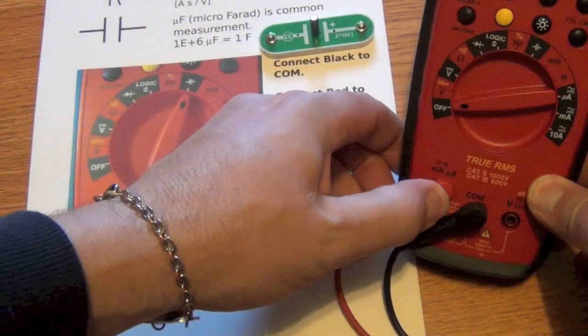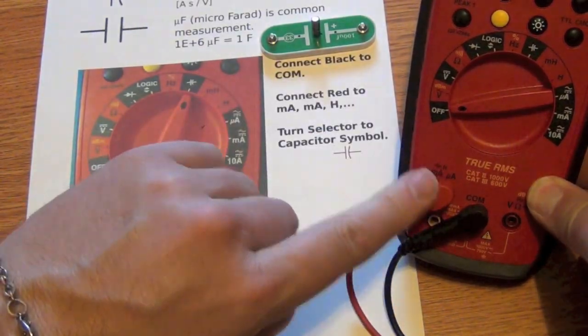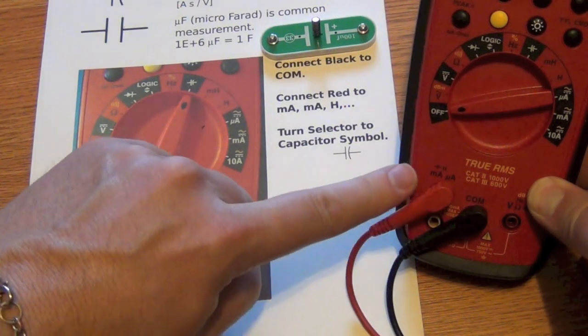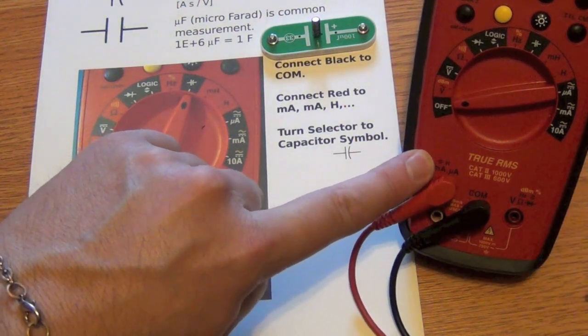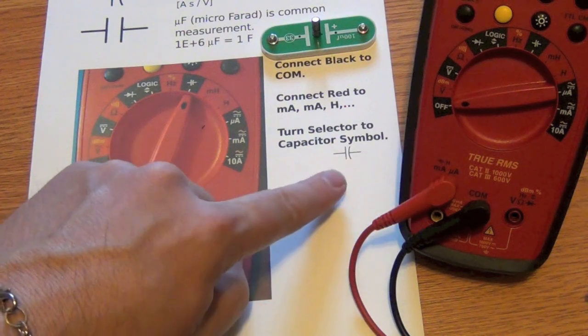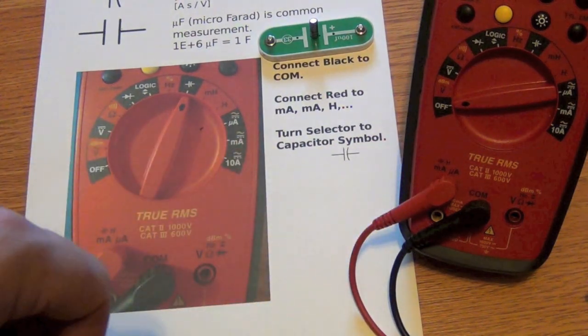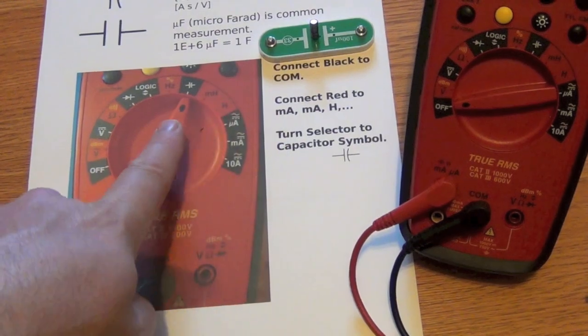When we're measuring capacitance, we want to make sure that our black is in the COM and that our red cable is in the one that matches the capacitance symbol. It's that little symbol there, a little tiny symbol on the front of the DMM. And then we're going to turn the selector to point to the capacitance.